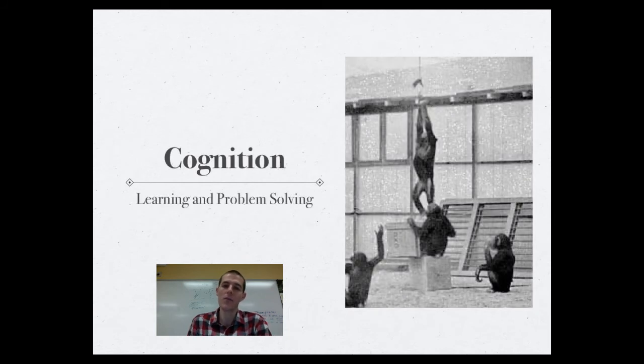Now, the highest level of learning and kind of mental work is cognition. And cognition involves basically problem solving, learning, associating, remembering, and overcoming some sort of challenge. Now, there have been a lot of studies done in this area. I'm just going to talk about two of them.